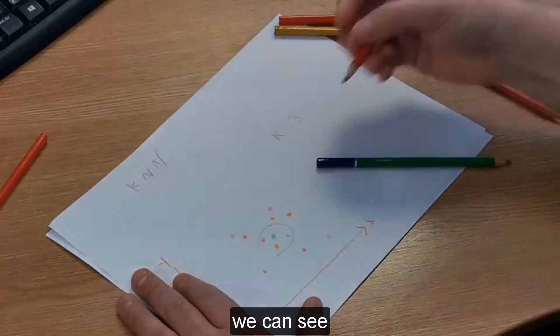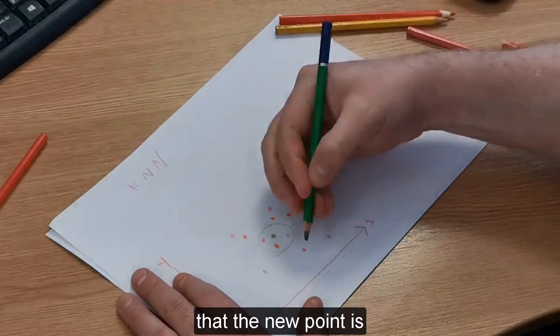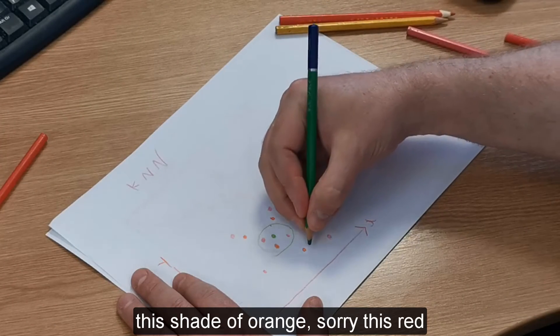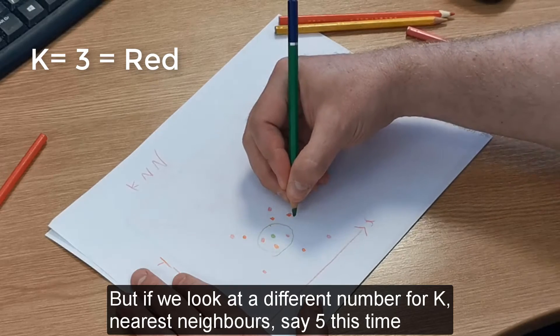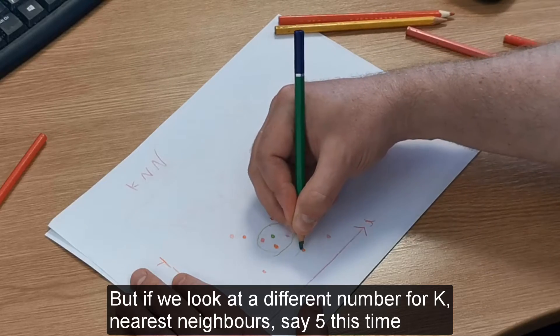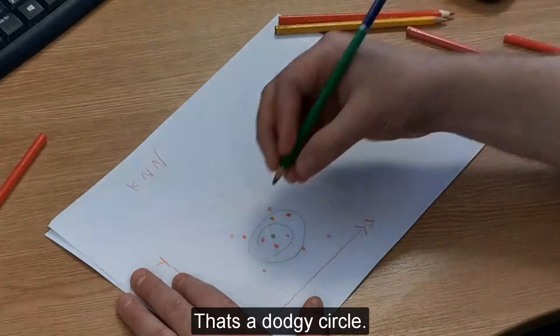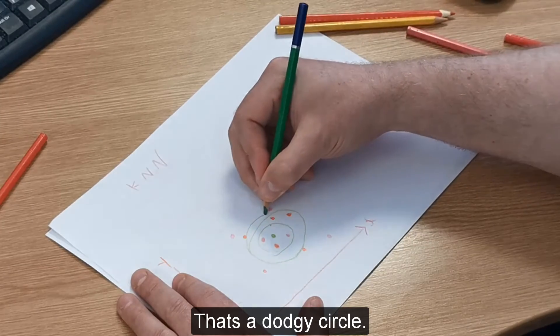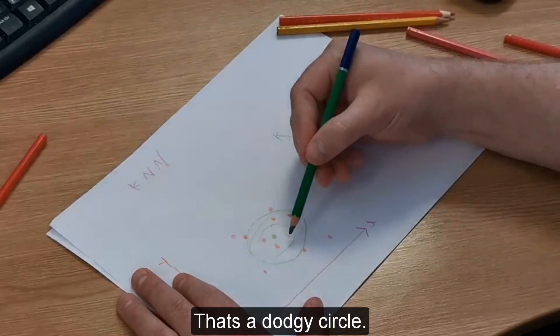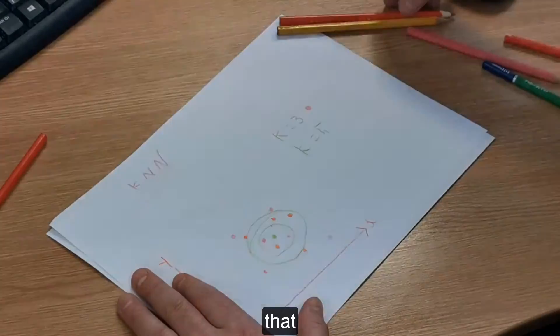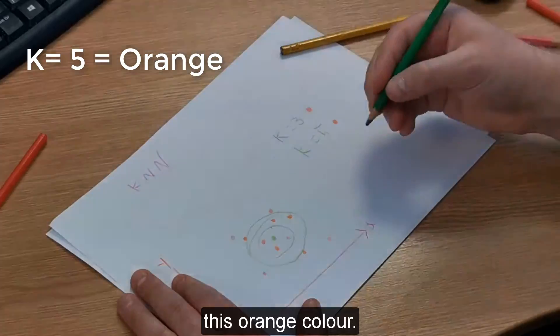We can see that this red is most likely. But if we look at a different number k of nearest neighbors—let's look at five this time—we can see that we get this orange color.